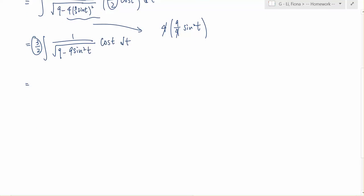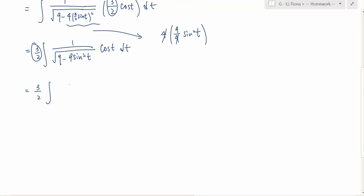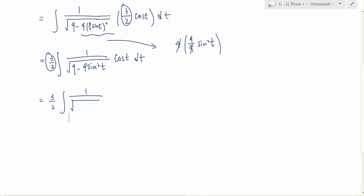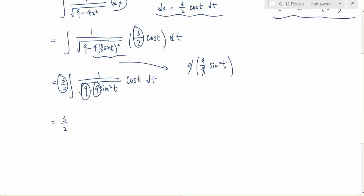So are we good here? So the next step we get is 3 over 2 times the integral of 1 over square root of 9 minus 9 sine. I apologize. So let's take this part out. Let's factorize this part.